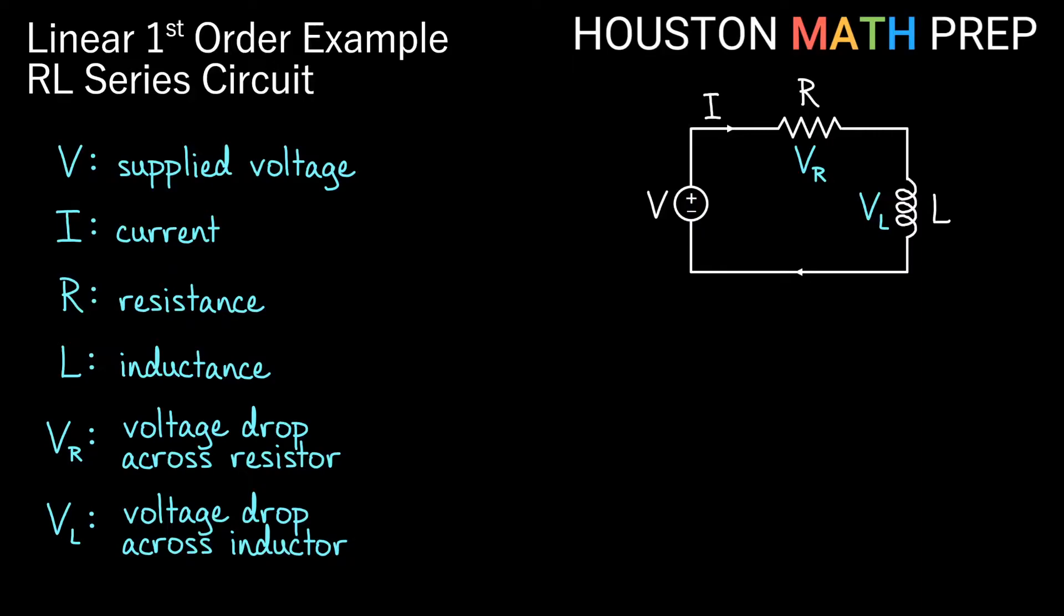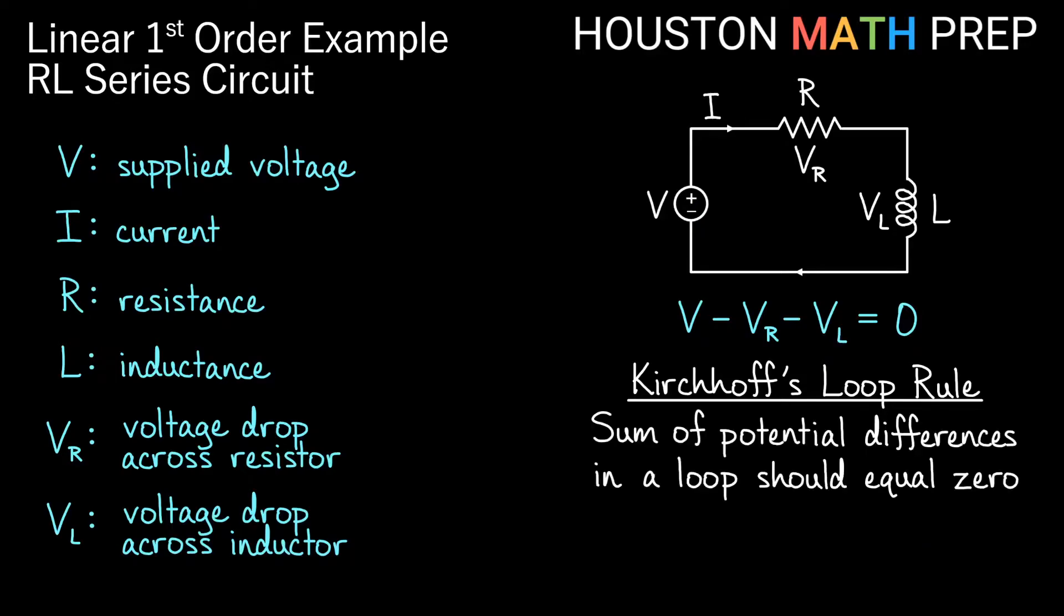And if we're familiar with any of Kirchhoff's rules for these circuits, we might know about the loop rule that would tell us this supplied voltage minus these voltage drops across the resistor and the inductor need to be zero. In other words, the idea is the sum of the potential differences in the loop should be zero.